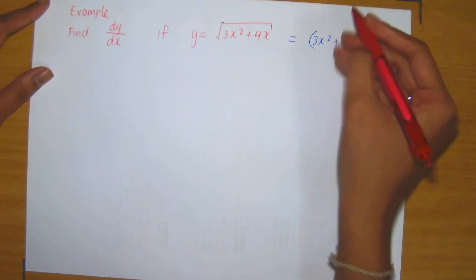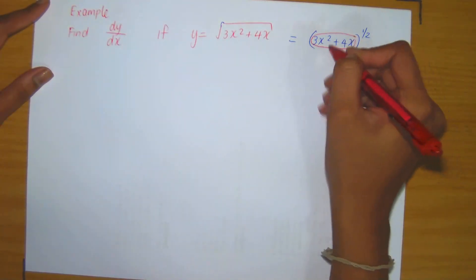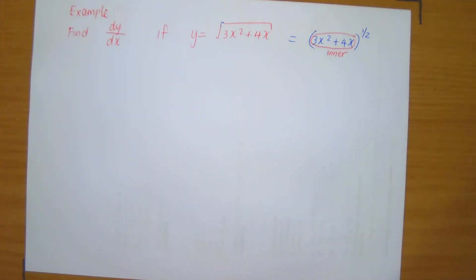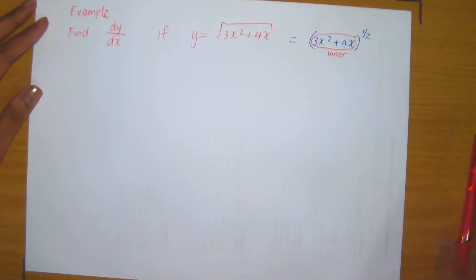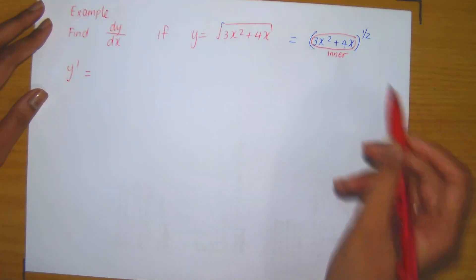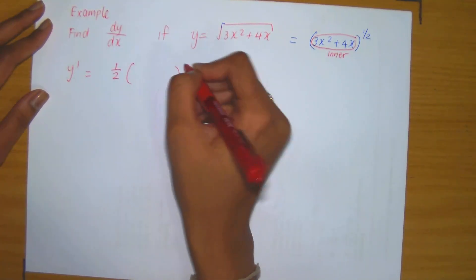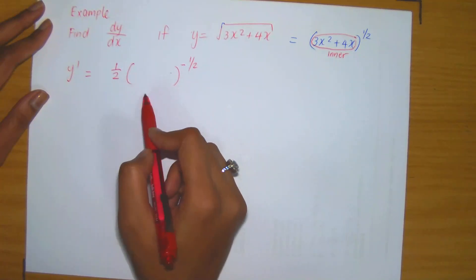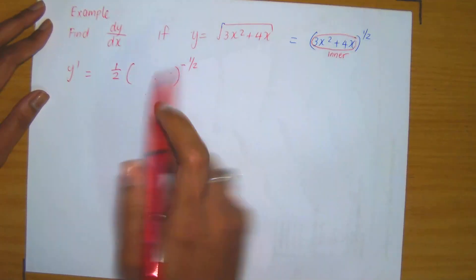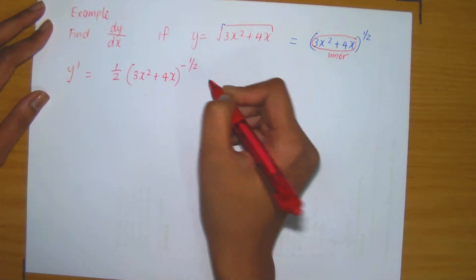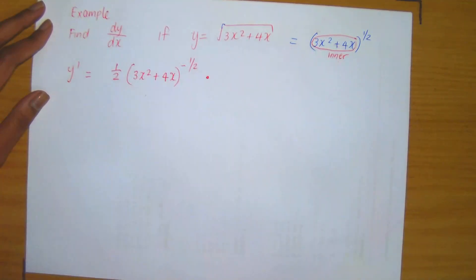Since this is a root, we can rewrite it as (3x² + 4x) to the power half. Observe that immediately you find there is an inner function — that's 3x² + 4x — and an outer function, which is the bracket to the power half. The outer function could be written as z to the power half. So we know we're using the chain rule. The derivative of the outer function — the bracket to the power half — gives a half times (3x² + 4x) to the minus half, evaluated at the inner function. And we must then multiply by the derivative of the inner function.